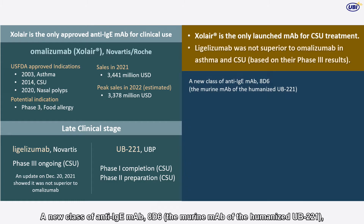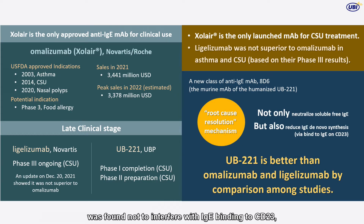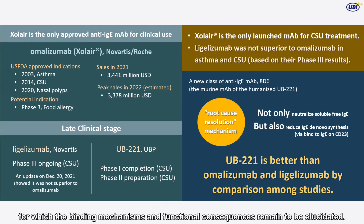A new class of anti-IgE monoclonal antibody, AD6 — the murine monoclonal antibody of the humanized UB221 — was found not to interfere with IgE binding to CD-23, for which the binding mechanisms and functional consequences remain to be elucidated.